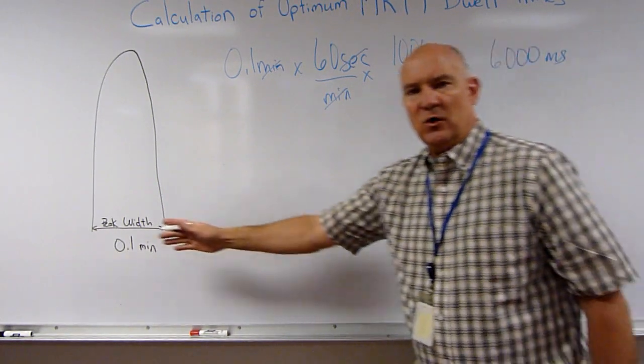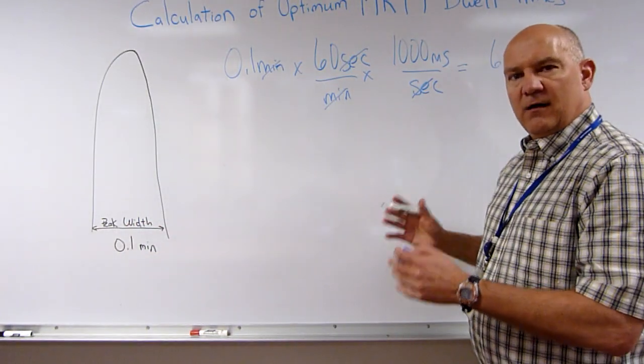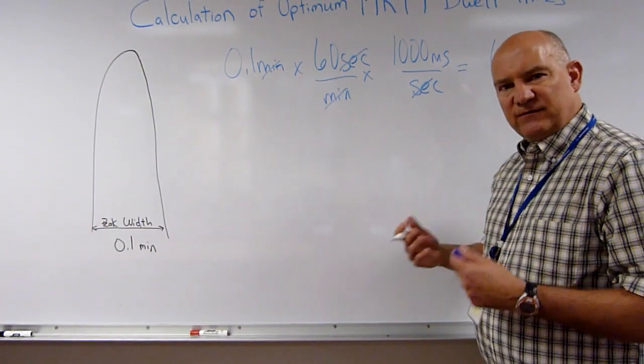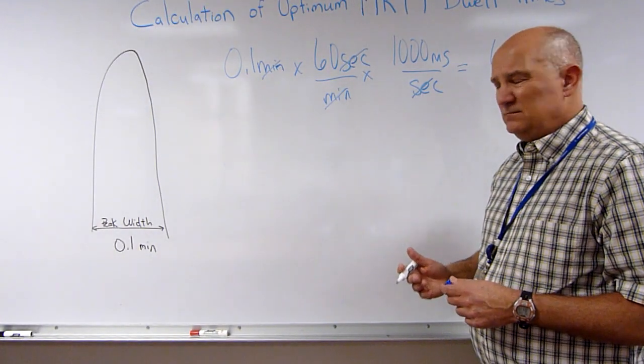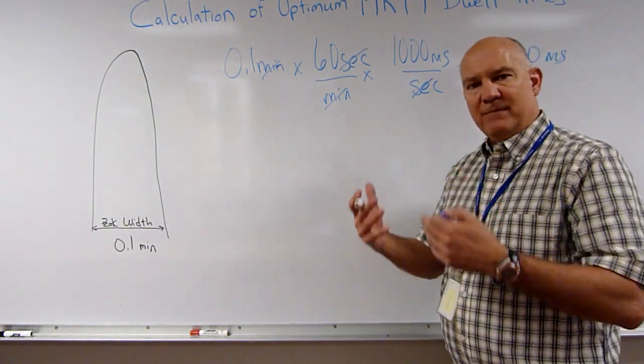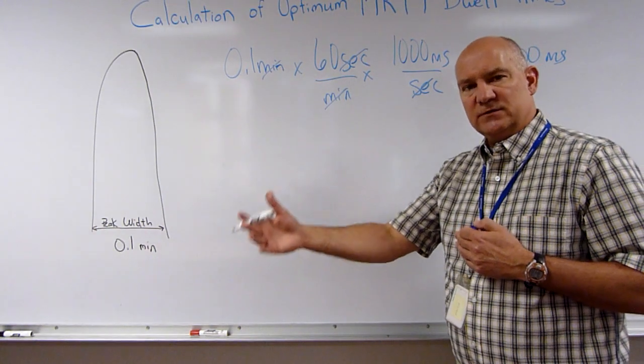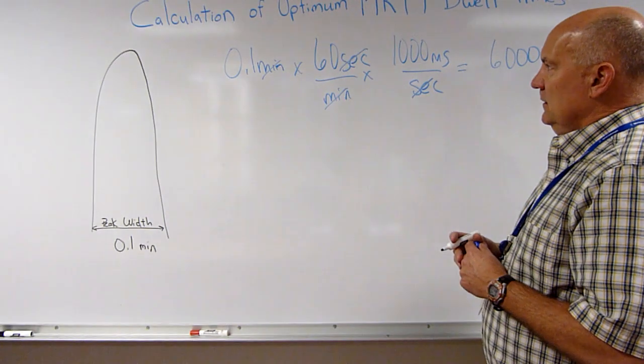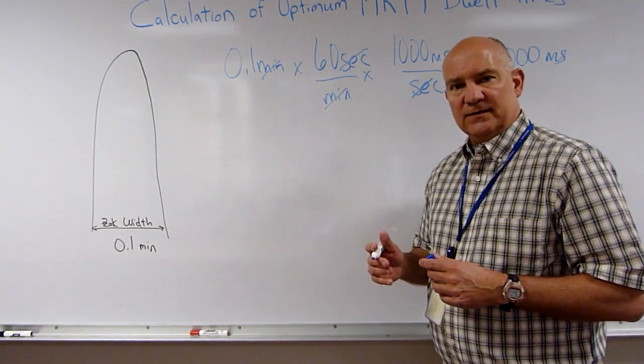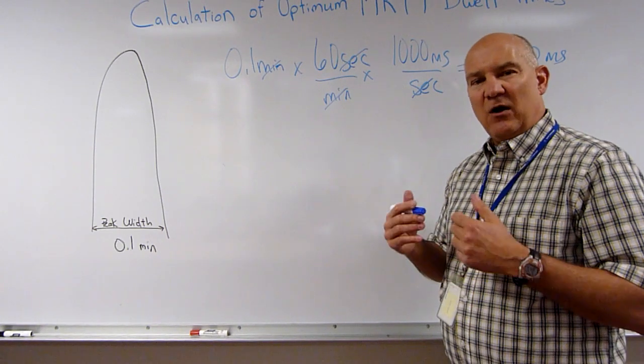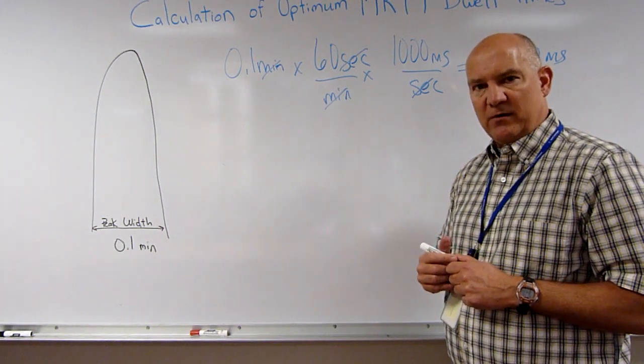This is the total time of the chromatographic peak into which I must fit all my experiments. What experiments am I talking about? I'm talking about the measurement of the precursor to product ion MRM transition. The next thing to consider is how many compounds do I have in my method and how many transitions per compound are there?